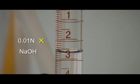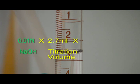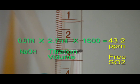To calculate the free SO2 in the sample, multiply the concentration of sodium hydroxide, in this case 0.01, times the mls dispensed from the burette and multiply the result by 1600. The result will be the free SO2 in parts per million.